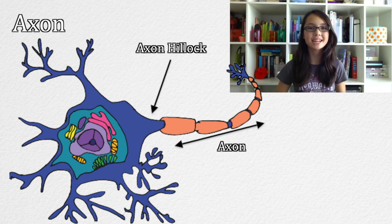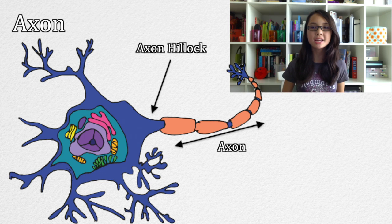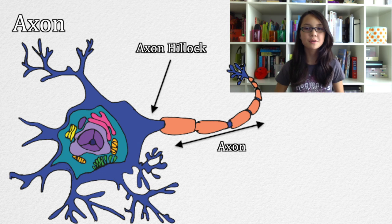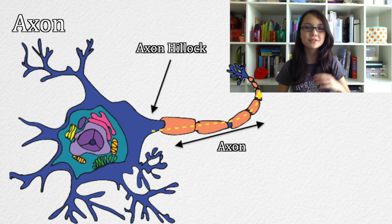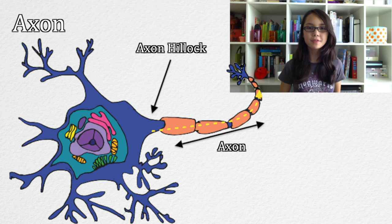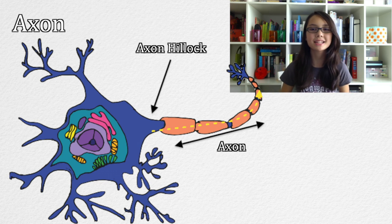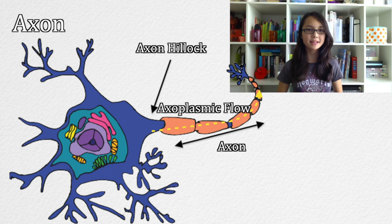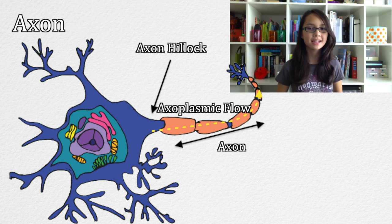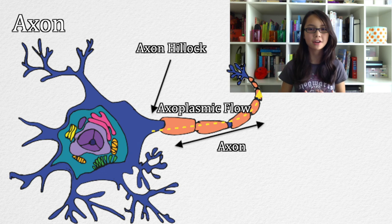An axon is unique to a neuron and not found in other cells. It connects to the soma in an area called the axon hillock. Its main job is to conduct signals from the soma to the terminals, which contain neurotransmitters. The axon transports substances from the ribosomes to the terminals in a process called axoplasmic flow, facilitated by microtubules found inside the axon. The axon is thicker than the dendrites, but it still branches out of the soma.